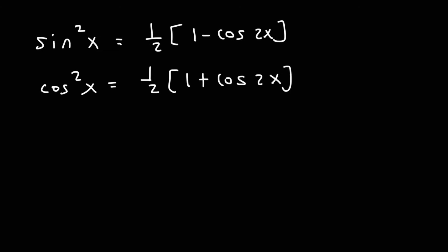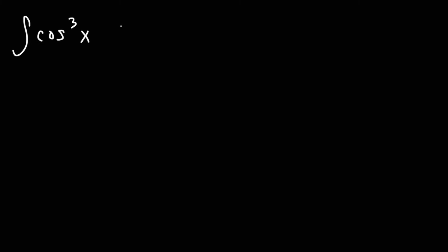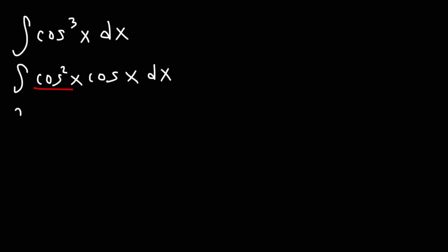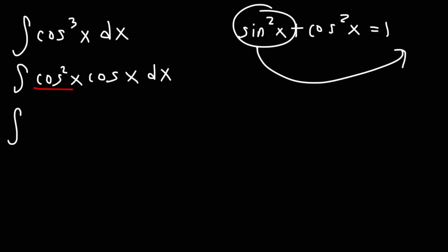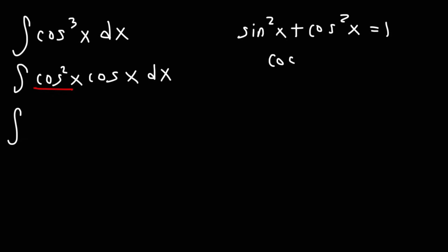The first problem we're going to work on is finding the antiderivative of cosine to the third x. What we can do is write cosine cubed as cosine squared times cosine x. We want to change cosine squared into 1 minus sine squared, since sine squared plus cosine squared equals 1. So we replace cosine squared with 1 minus sine squared.